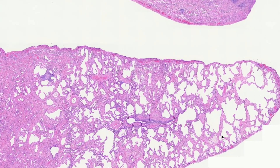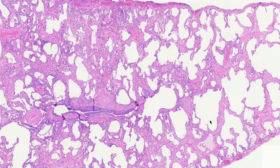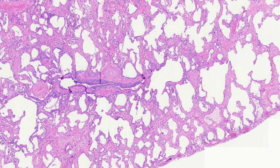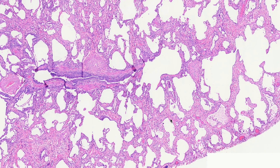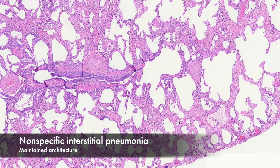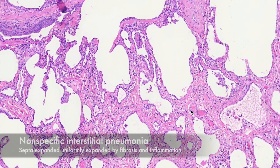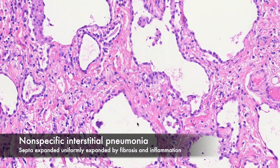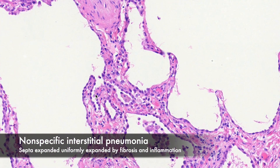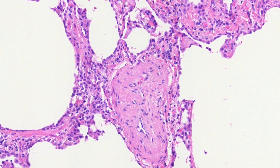At intermediate power in a better-preserved area, you'll notice that the alveolar architecture is largely maintained. We're not seeing big areas of architectural distortion or microscopic honeycomb change that we'd see in cases of usual interstitial pneumonia. When we go down a bit further, we can see that the alveolar septa are really intact, except they're expanded — expanded by both fibrosis as well as a mixture of chronic inflammatory cells diffusely expanding the alveolar septa.